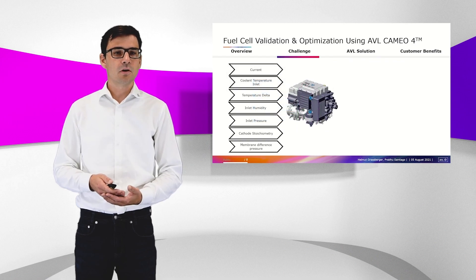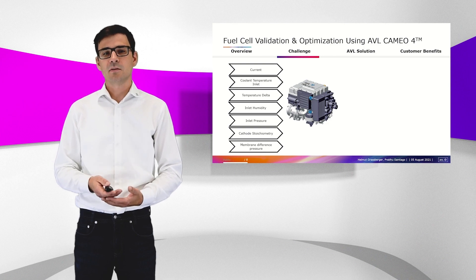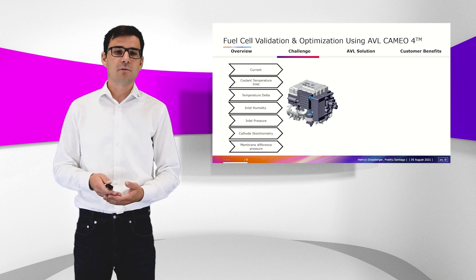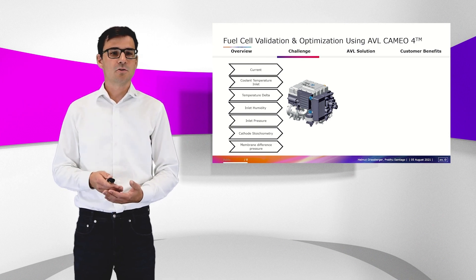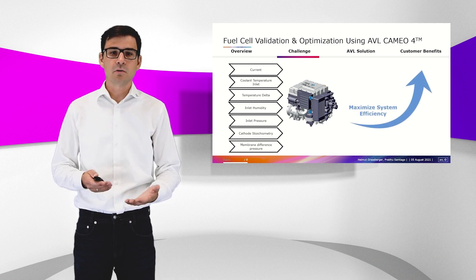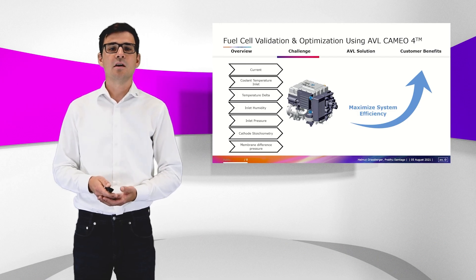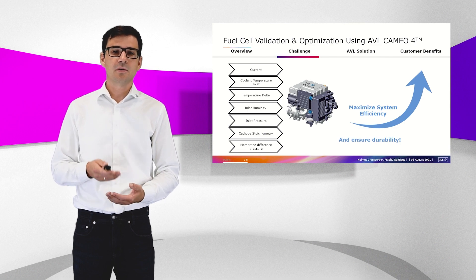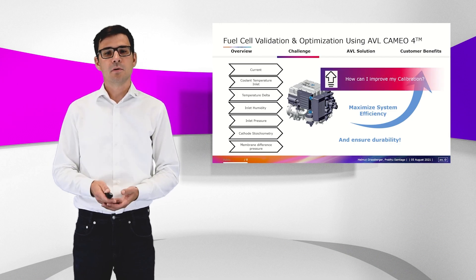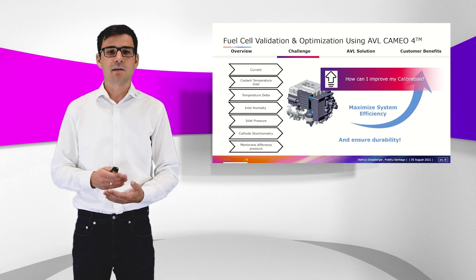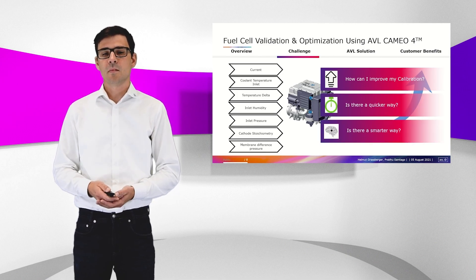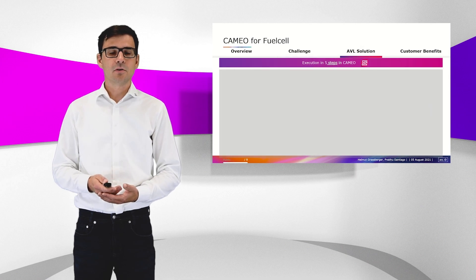We will also have a look at the challenges for more complex tests, such as optimization tests and the optimization tasks after the test. We have to consider fuel cell systems with various inputs such as pressure levels, temperature levels, and so on — it is a high-dimensional input space. How do we maximize efficiency in these systems and yet have safe and durable operation? How can you improve calibration beyond what manual tweaking can achieve? Is there a quicker and smarter way? In the next slides, we will see the AVL solution.